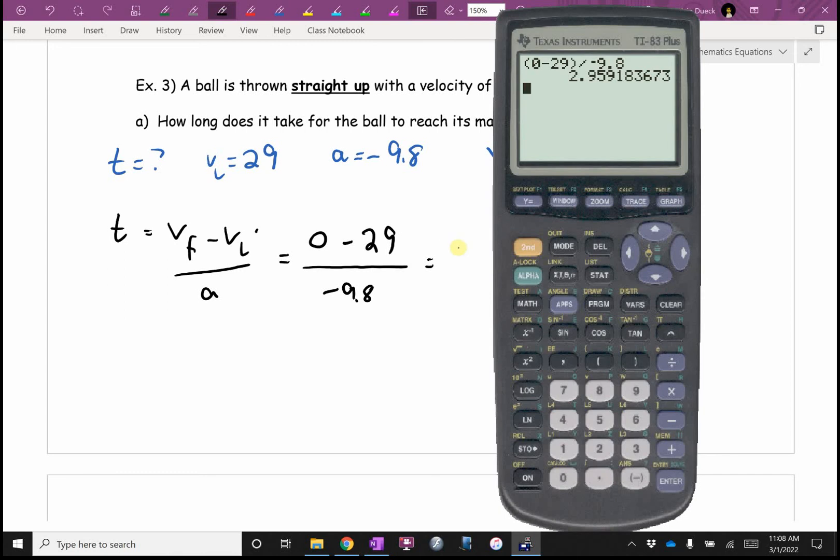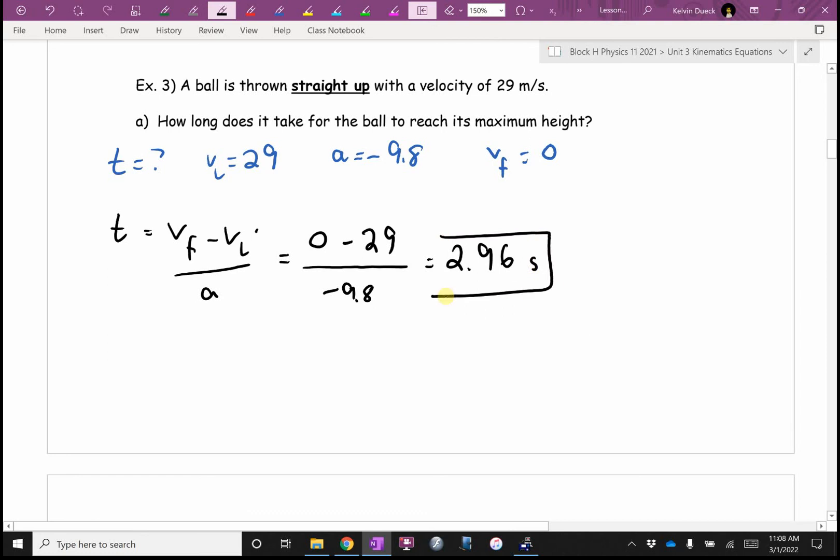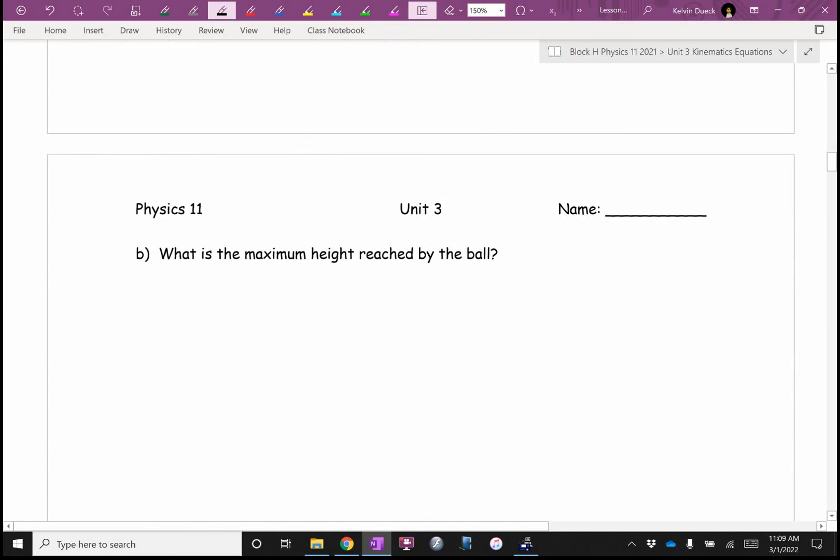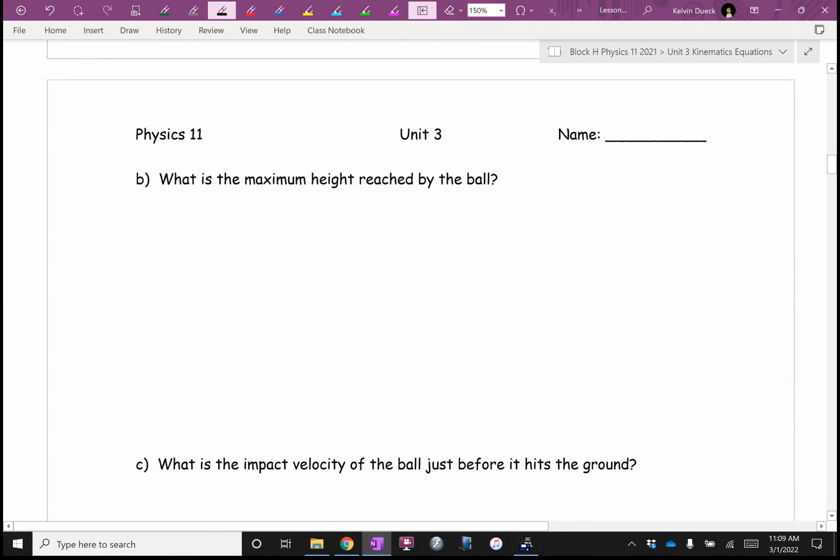It's going to be zero minus 29 all over negative 9.8. Am I going to get a negative answer? I can't get a negative answer. Time has to be positive. I better get, did I get a positive answer? You mean the universe took care of me as long as I entered the correct data? I like that. Zero minus 29 divided by negative 9.8. I got 2.96 seconds. Is that right? So that's something we can do. What else can I ask? I like B. B is a nice question.